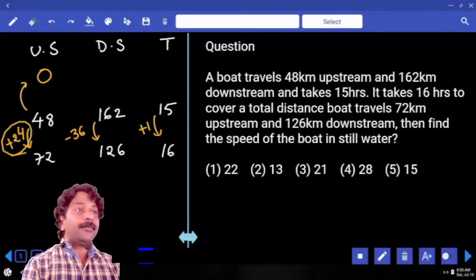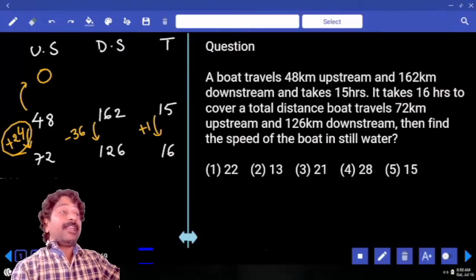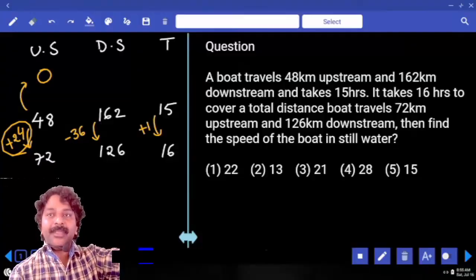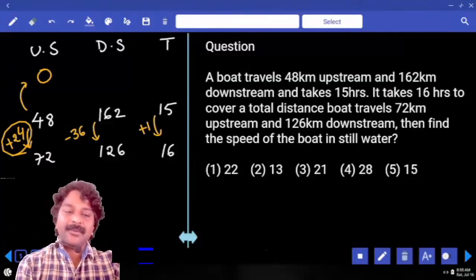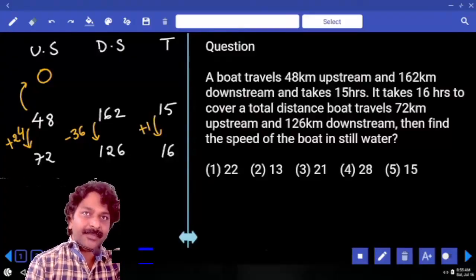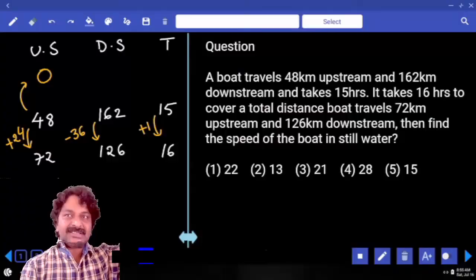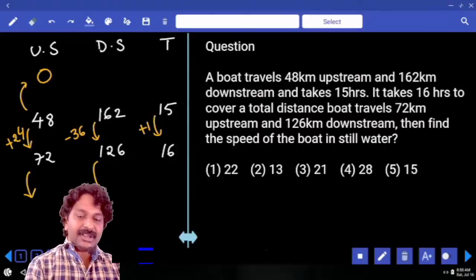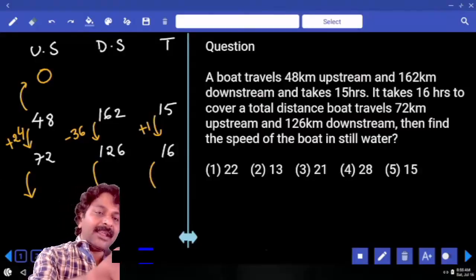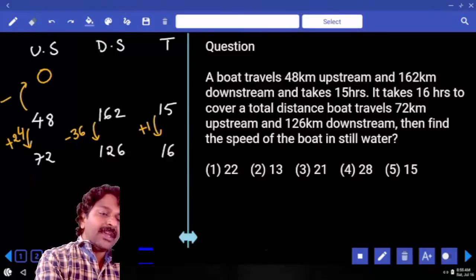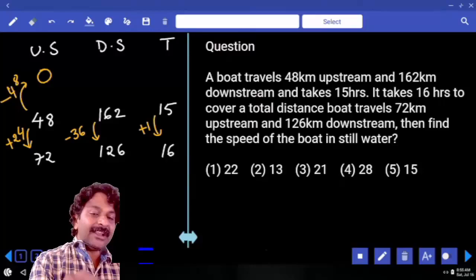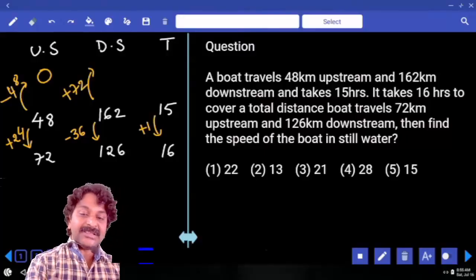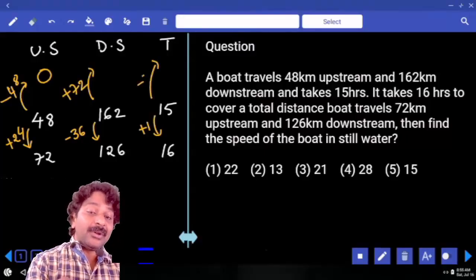So when you are taking two times of the distance in upstream, downstream also two times you have to take. Time also two times you have to take. Correct. So exact reverse approach we are doing. Onward direction, reverse direction. If it is onward direction, we have to add distance in upstream, subtract distance in downstream, add time. When you are going for reverse approach, here we have to subtract 48 kilometers. Here we have to add 72 kilometers. Here time we have to subtract 2 hours. Are you getting?